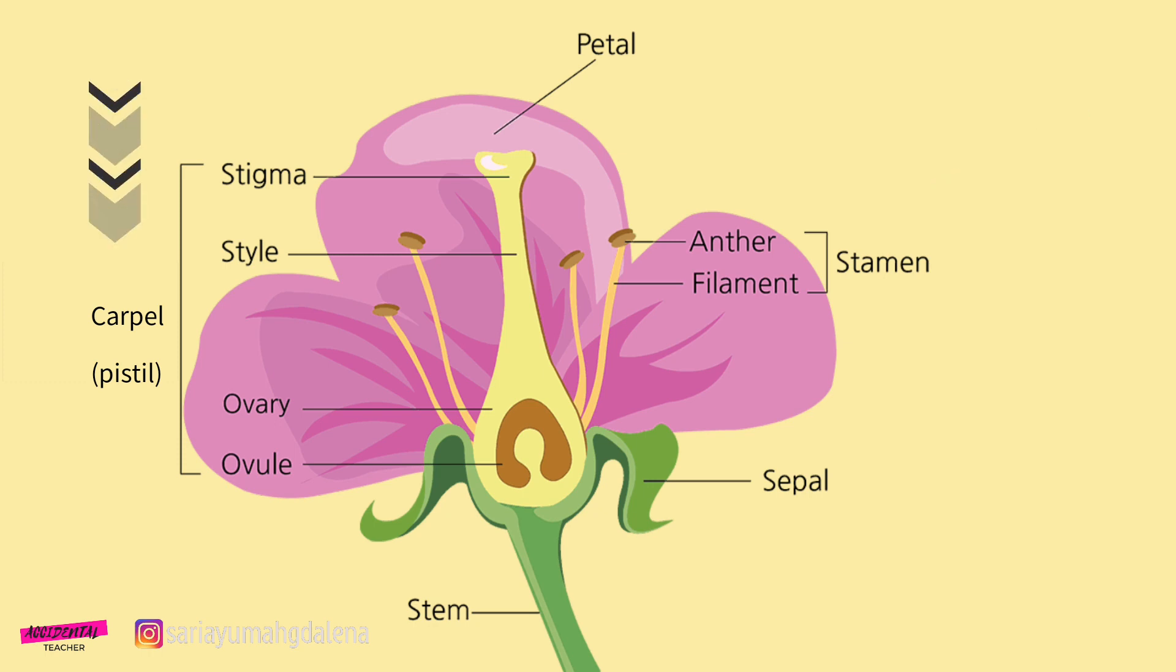The female organ is called the carpal. The carpal consists of the stigma, style, ovary, and ovule.